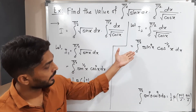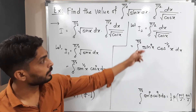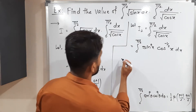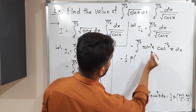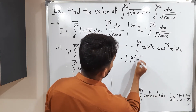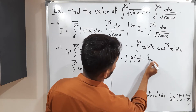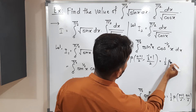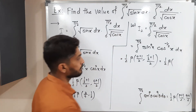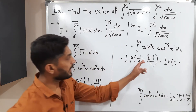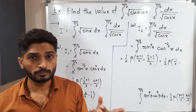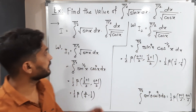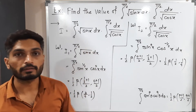Again we have the same form, so let us use the same relation for this integral. So I2 = (1/2) · Beta((0 + 1)/2, (−1/2 + 1)/2) = (1/2) · Beta(1/2, (1/2)/2) = (1/2) · Beta(1/2, 1/4). This is the value of the second integral. So finally what we have to do is take the product of both integrals to get the final answer.